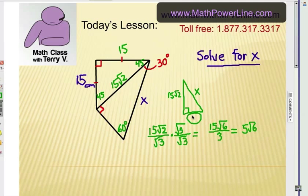Alright, so this short leg here, and I don't think I have room to write it in, but it's five radical six. Now when we double it, that will give us ten radical six.